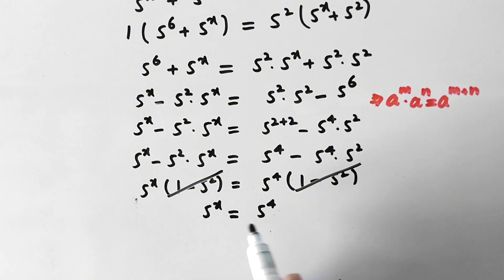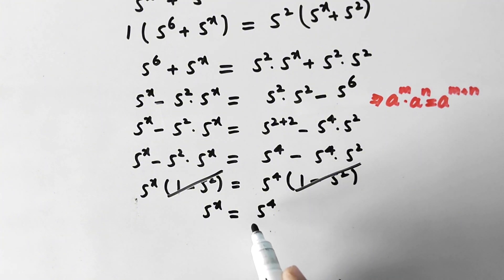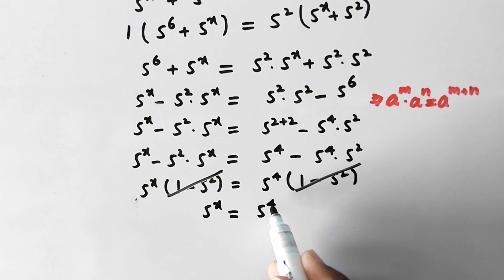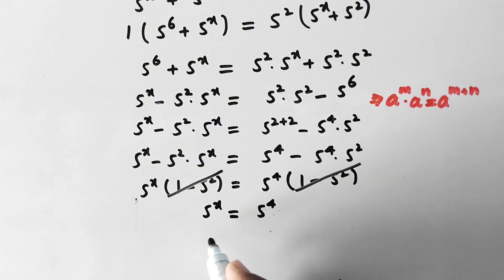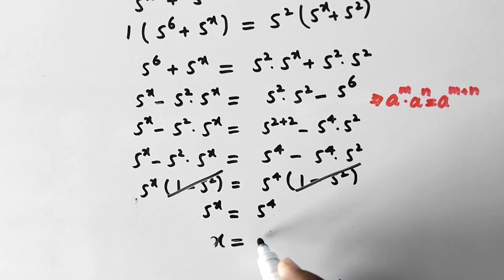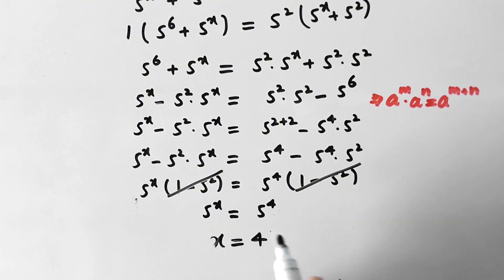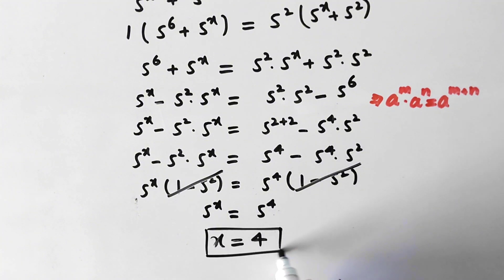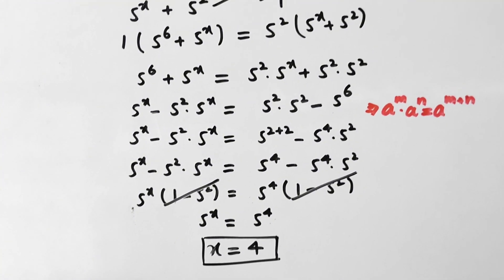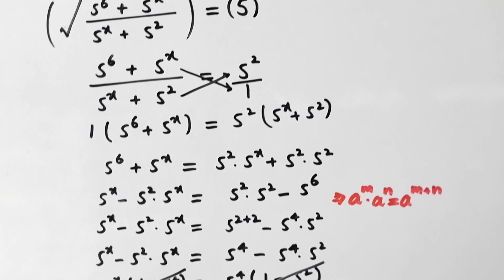Since the bases are the same on both sides, we can compare the powers. Therefore we get x equal to 4. That is the value of x. Now let's verify.